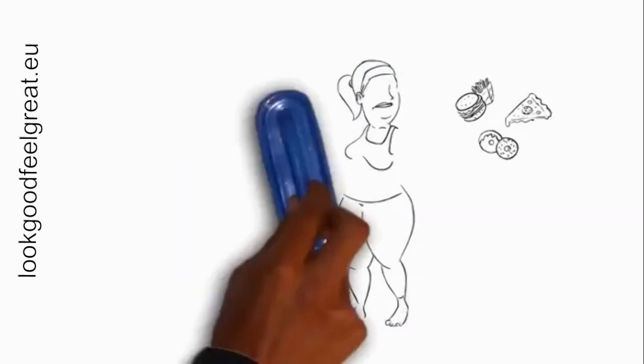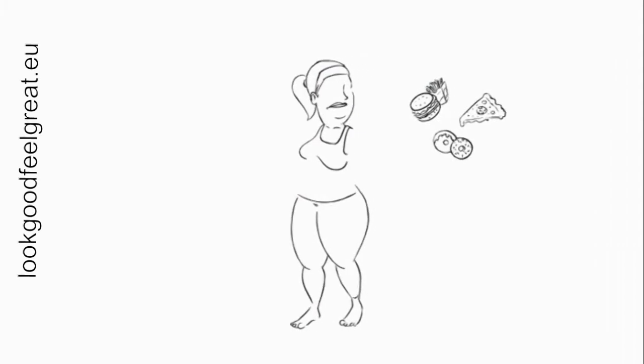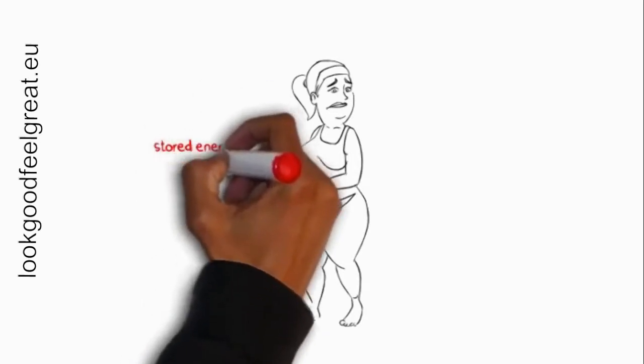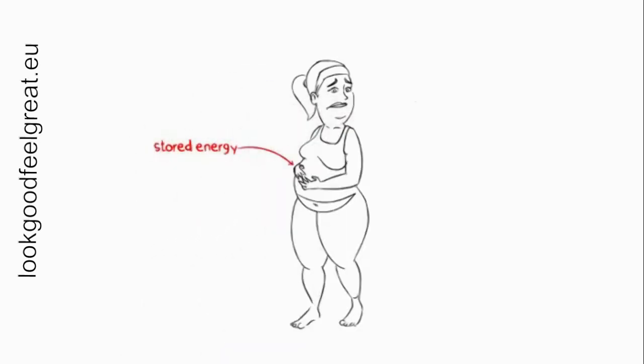Why? Because leptin's main function is to protect your body against starvation. And in the midst of decreased food intake, like dieting, your body unfortunately views your stored body fat as a huge asset to survival. After all, body fat provides a vast supply of stored energy and warmth, both highly valued resources when food is in short supply.